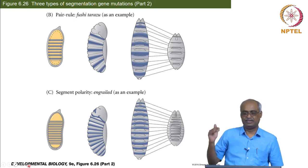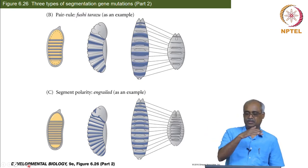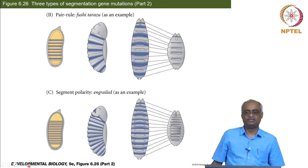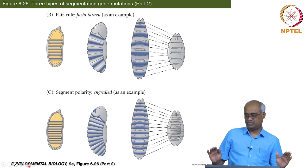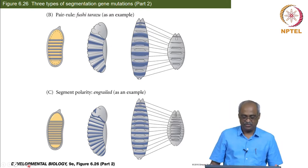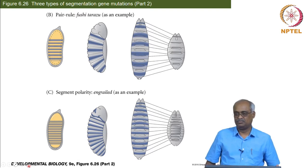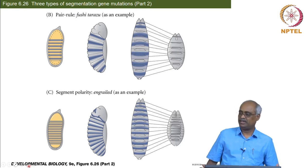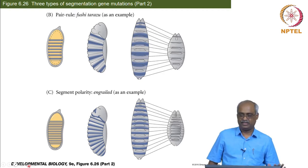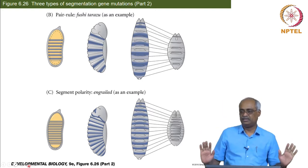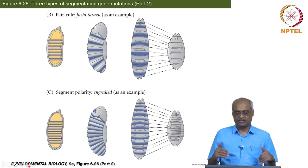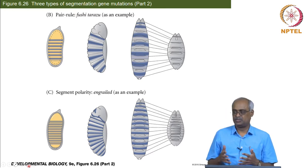First we learnt dorsal-ventral, which starts in the oocyte itself and then continues into the syncytial blastoderm. Then we started with the head-to-tail axis — anterior-posterior — in the previous class, where we learnt you have a set of maternally encoded proteins acting as translation regulators and transcriptional controls, making anterior-to-posterior and posterior-to-anterior gradients, controlling gap gene expression. Today we start from gap genes and move on.